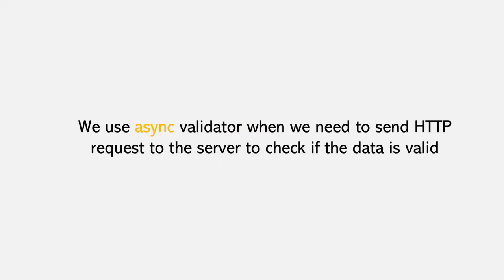We use async validators when we need to send HTTP requests to the server to check if the data is valid. When we send an HTTP request to the server, the server might take some time in sending the response. So we need to wait for that time, and when the data is available, then only it should be validated. For that, we use an async validator.